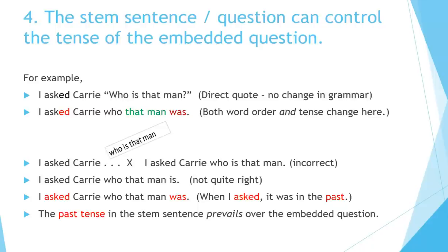For example, 'I asked Carrie, who is that man?' is a direct quote — no change in grammar. But 'I asked Carrie who that man was' changes both the word order and tense. Let's look at this step by step. Starting with 'Who is that man?' and inserting it into 'I asked Carrie': 'I asked Carrie who that man was' is correct. When I asked, it was in the past tense. The past tense in the stem sentence usually prevails over the embedded question.